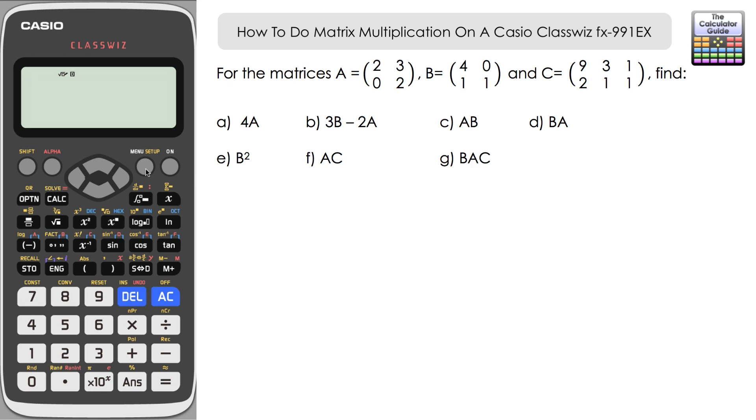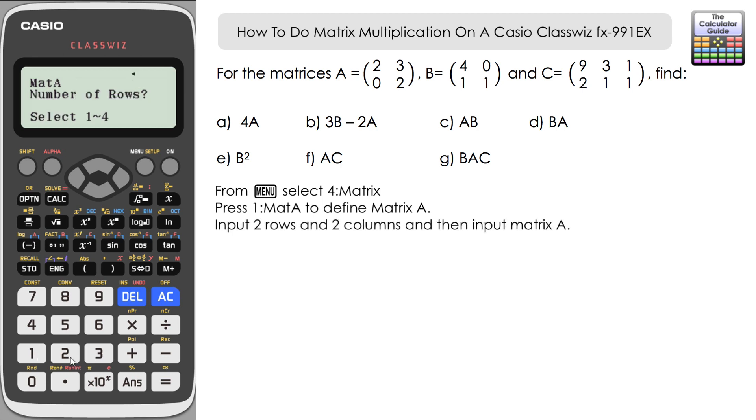So we're going to start from the menu and we're going to select for matrix and we're going to define matrix A, so press 1. Now A is a 2 by 2 matrix, two rows, two columns.